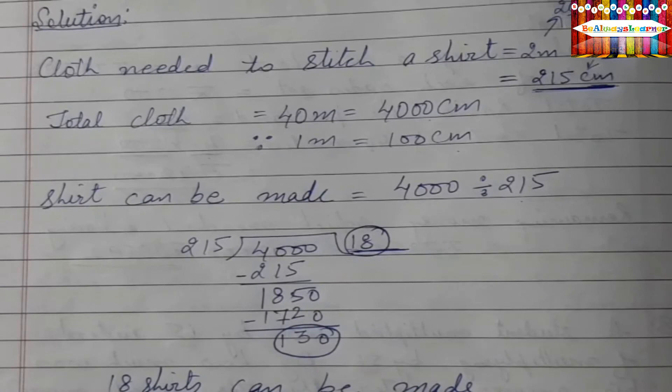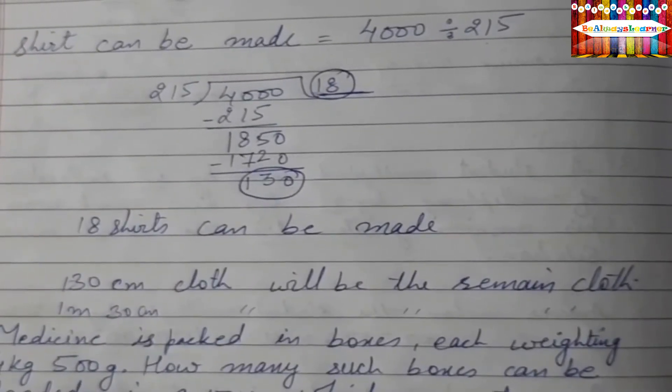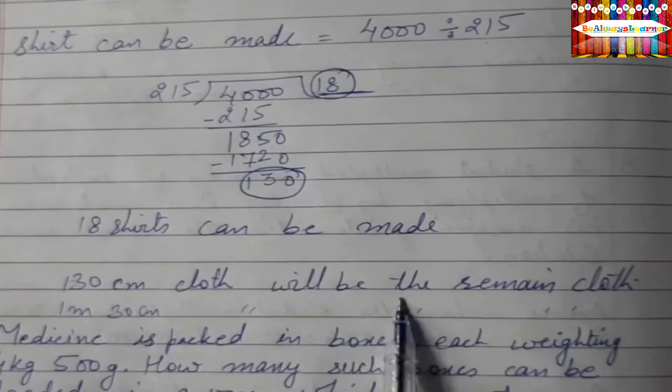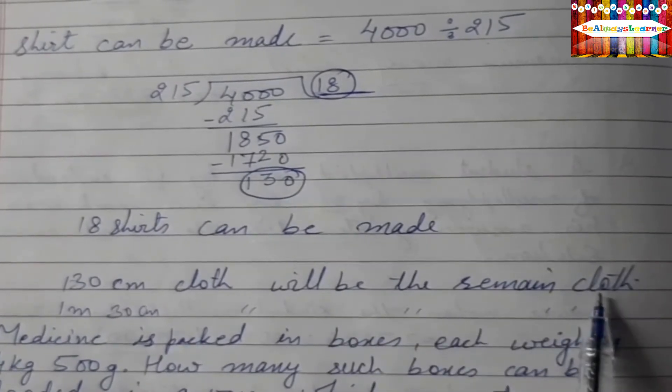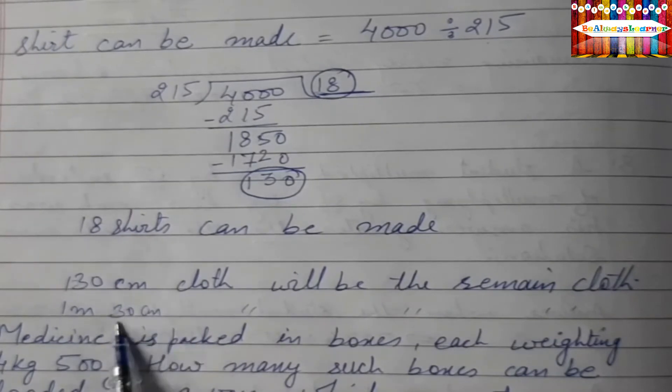So how can we write it? That is, we can write that 130cm cloth will remain with us. How can we write it? 130cm is 1m and 30cm.